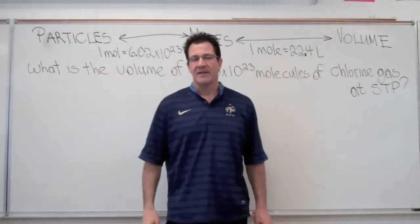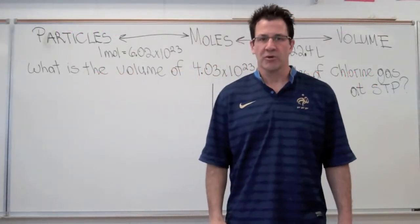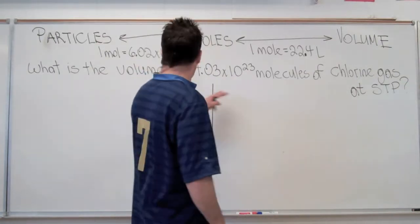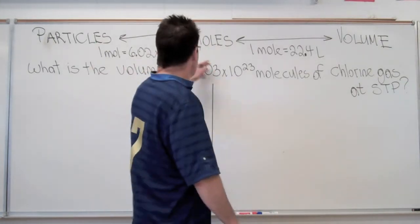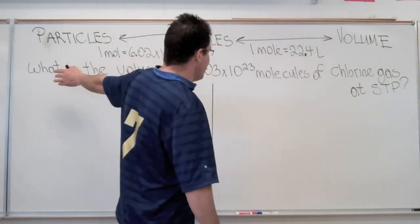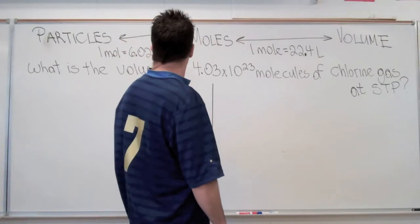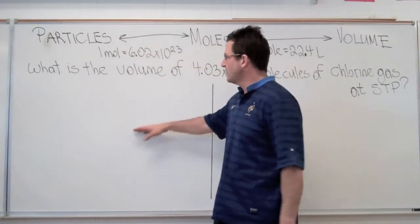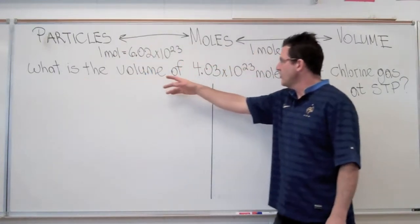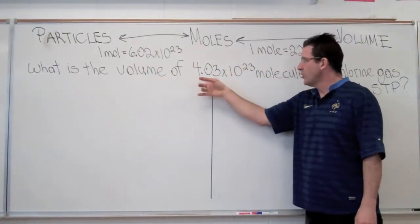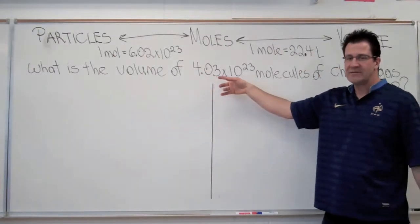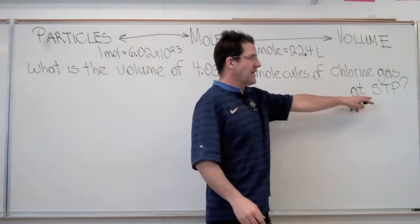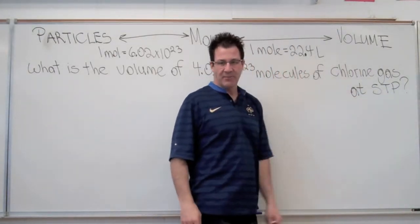In today's video, we're going to do another quick molar conversion. In this case, we're going to be going from the number of particles to the volume. Let's read our question: What is the volume of 4.03 times 10 to the 23rd molecules of chlorine gas at standard temperature and pressure?